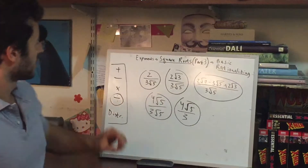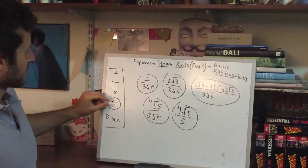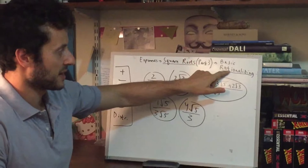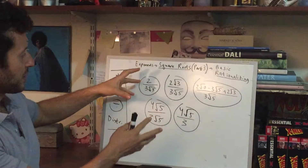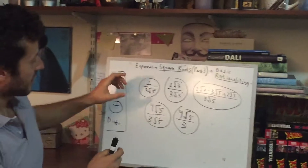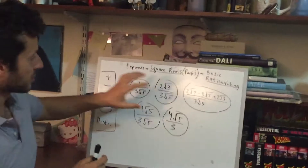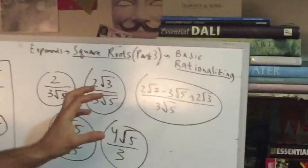Today we're going to go over those nasty division problems, and this is going to be referred to as rationalizing. So there are five scenarios here, and today is just going to be about basic rationalizing. The basic part refers to the denominator looking pretty simple.